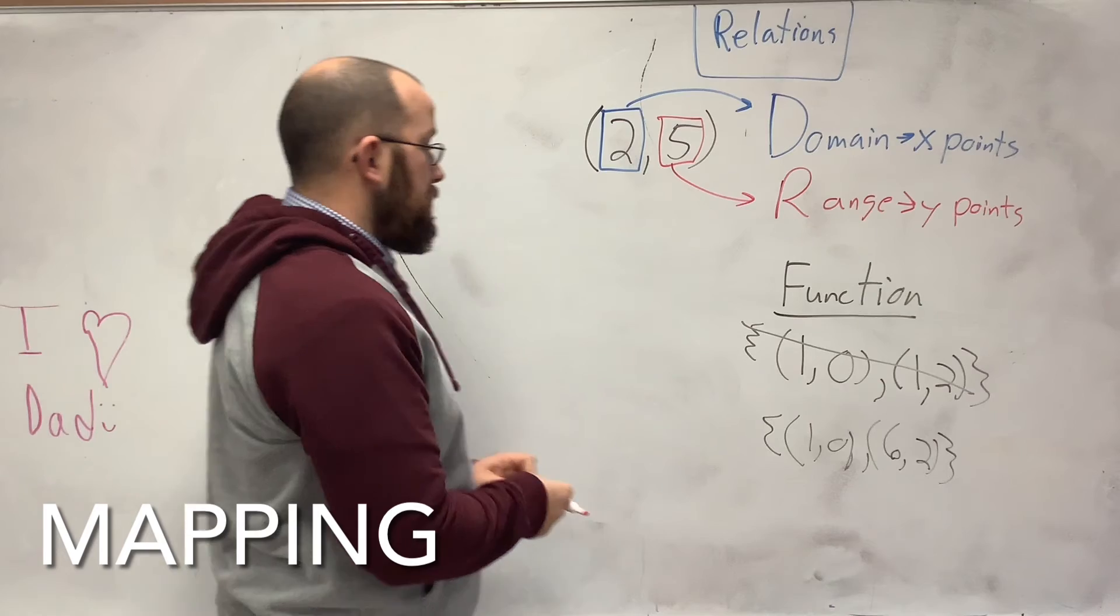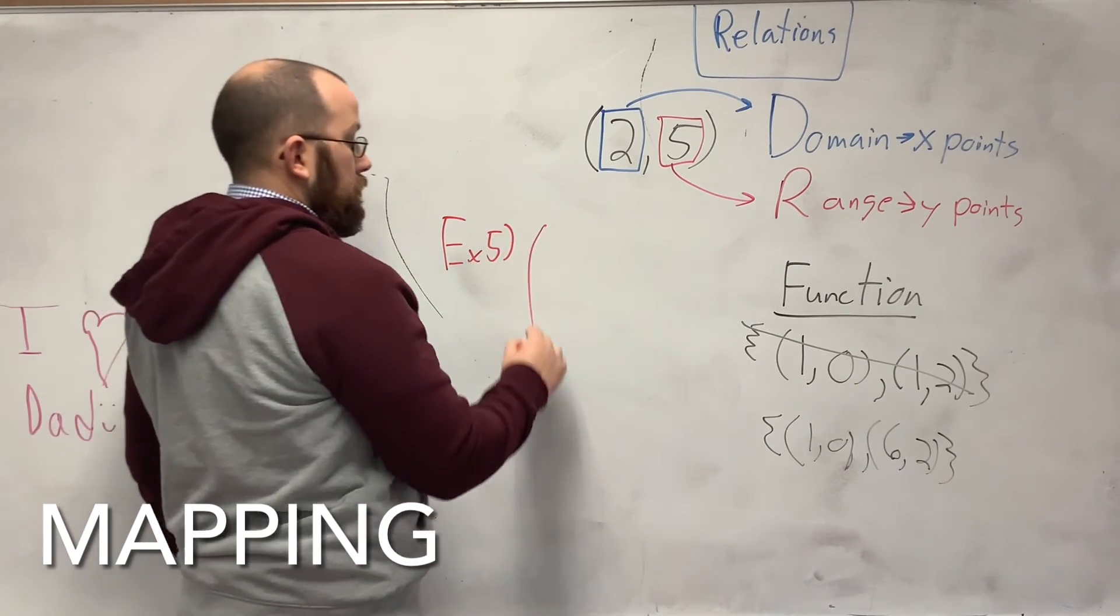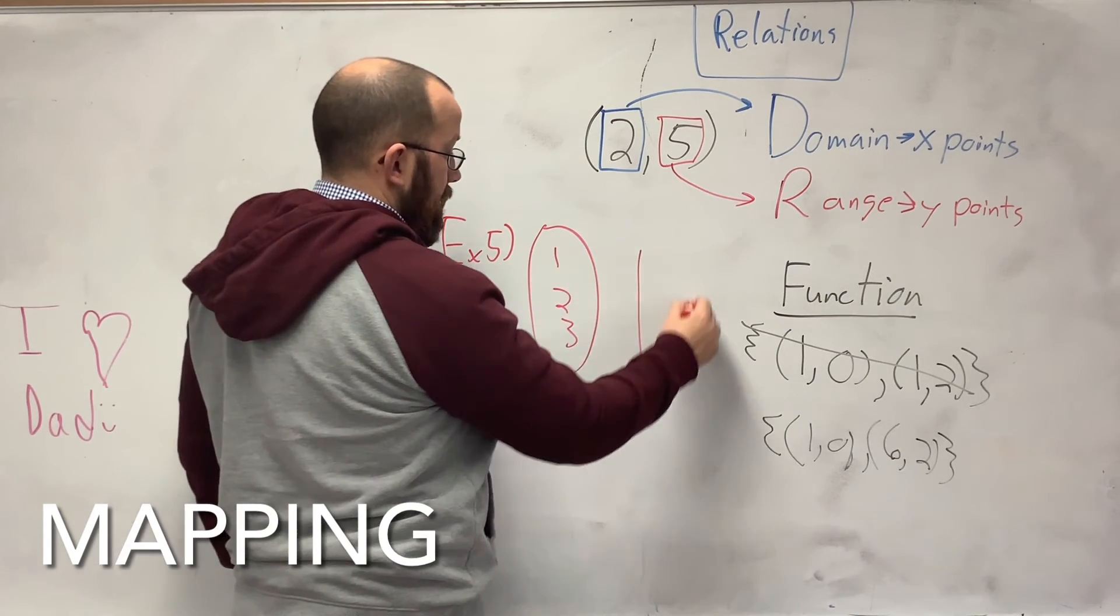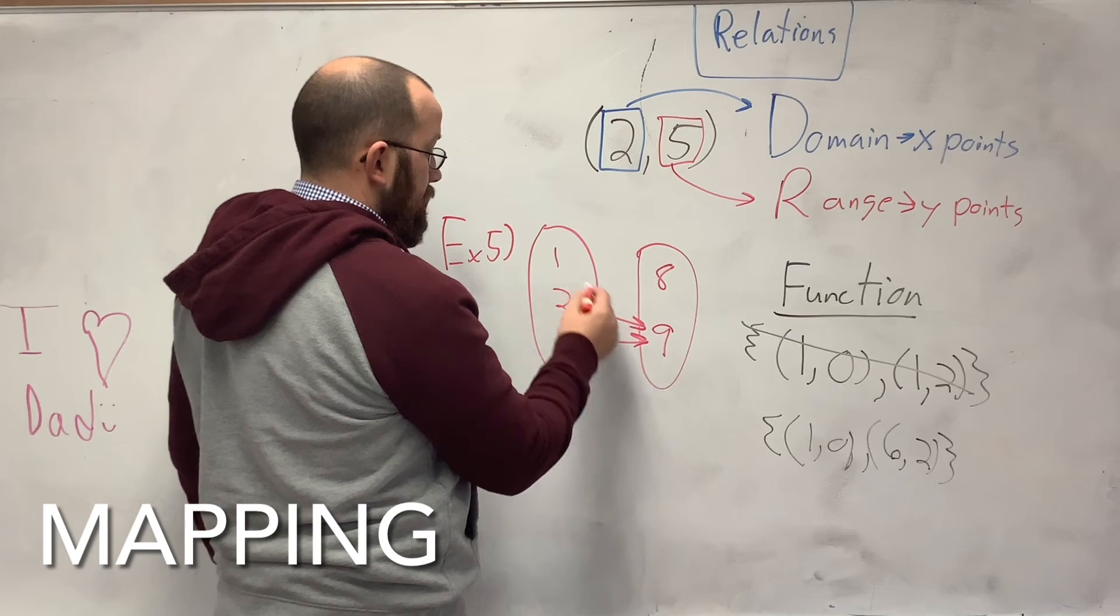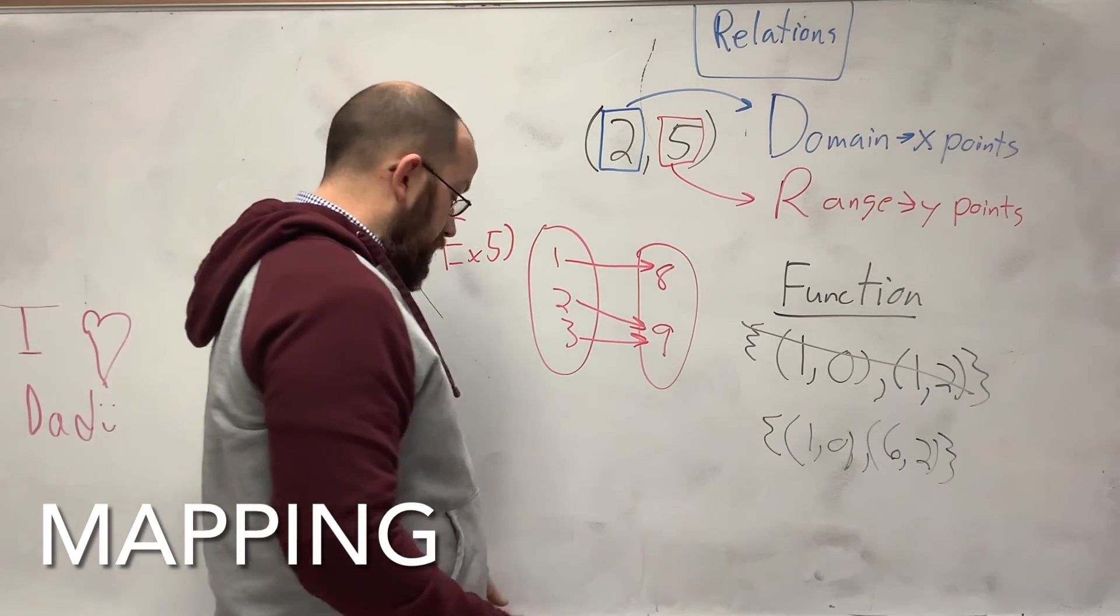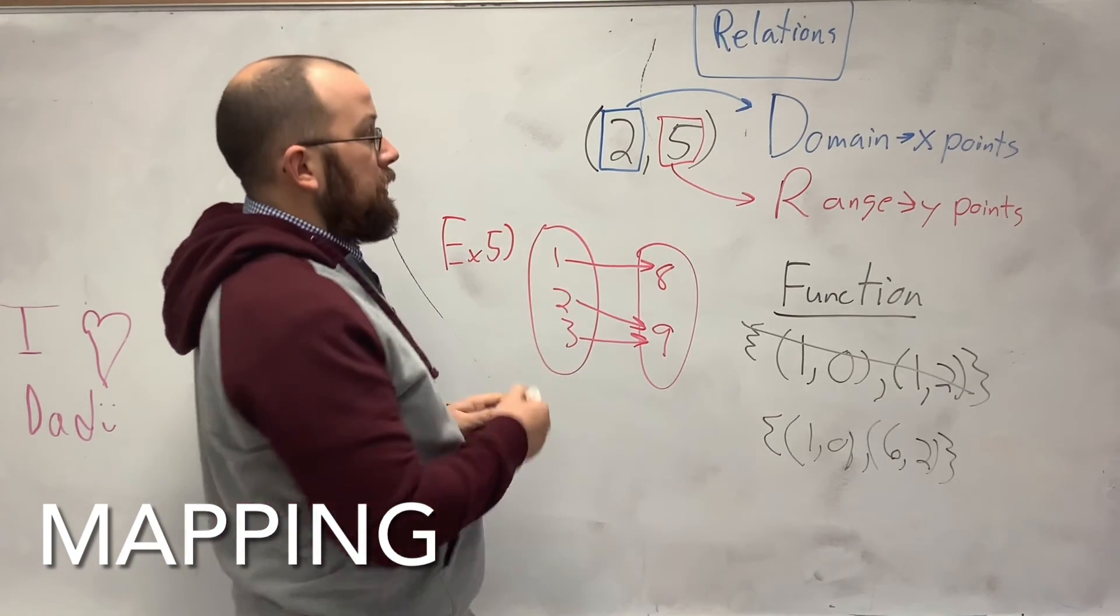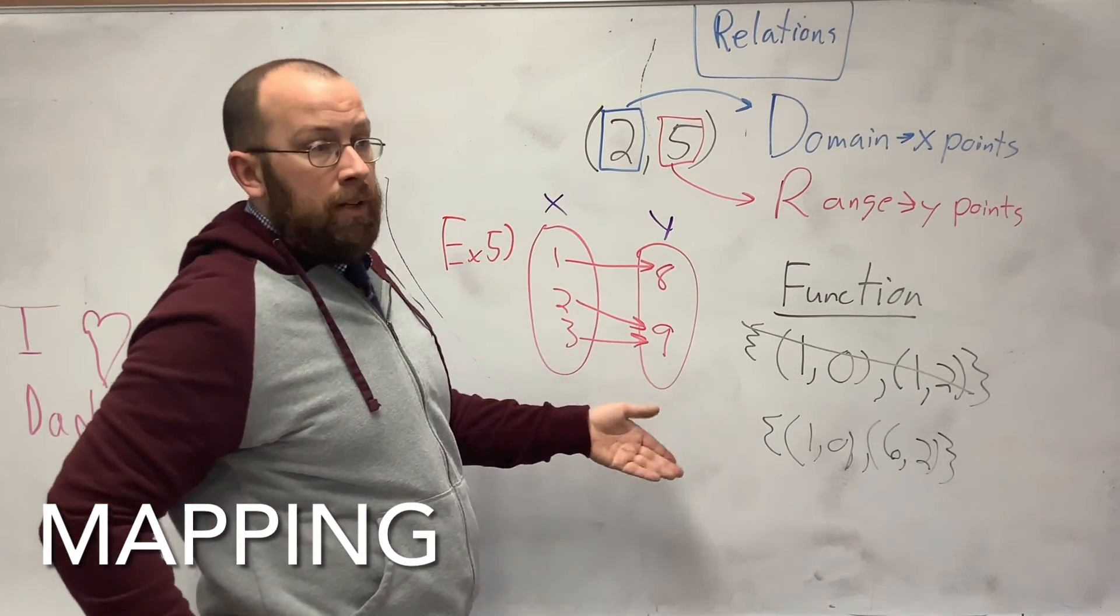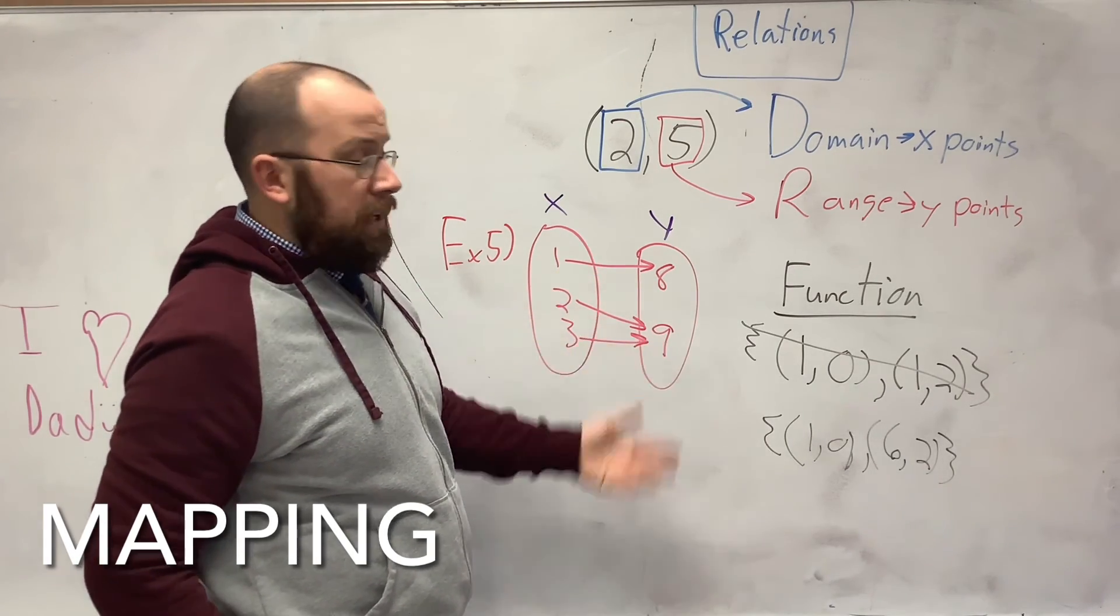And another way to show these points is what's called mapping. So basically just two ovals. These will have numbers off of them. Now, is that a function? Well, is each first coordinate, which would be these, the x's, and those would be the y, are they paired with exactly one other number? So 1 is with 8, so we're good. 2 is with 9, yes. 3 is with 9, so yes, we're good.